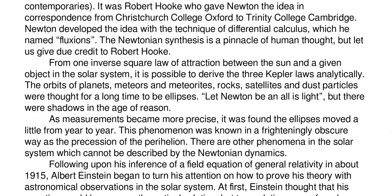From one inverse square law of attraction between the sun and a given object in the solar system, it is possible to derive the three Kepler laws analytically, but not using Newtonian methods. Lagrangian methods must be used. The orbits of planets, meteors and meteorites, rocks, satellites and dust particles were thought for a long time to be ellipses. As measurements became more precise it was found that the ellipses moved a little from year to year. This phenomenon was known in a frighteningly obscure way as the precession of the perihelion.